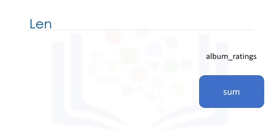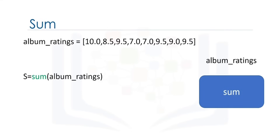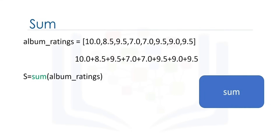The function sum takes in an iterable, like a tuple or list, and returns the total of all the elements. Consider the following list. We pass the list into the sum function and assign the result to the variable s. The function determines the total of all the elements, then returns it. In this case, the value is 70.